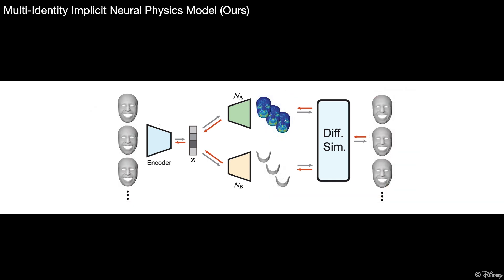A true model that captures personality would be able to learn from such regularities. Inspired by this, we extended the network design from Yang et al. to allow training on performance data from multiple identities at once, learning cross-identity physical correlations.